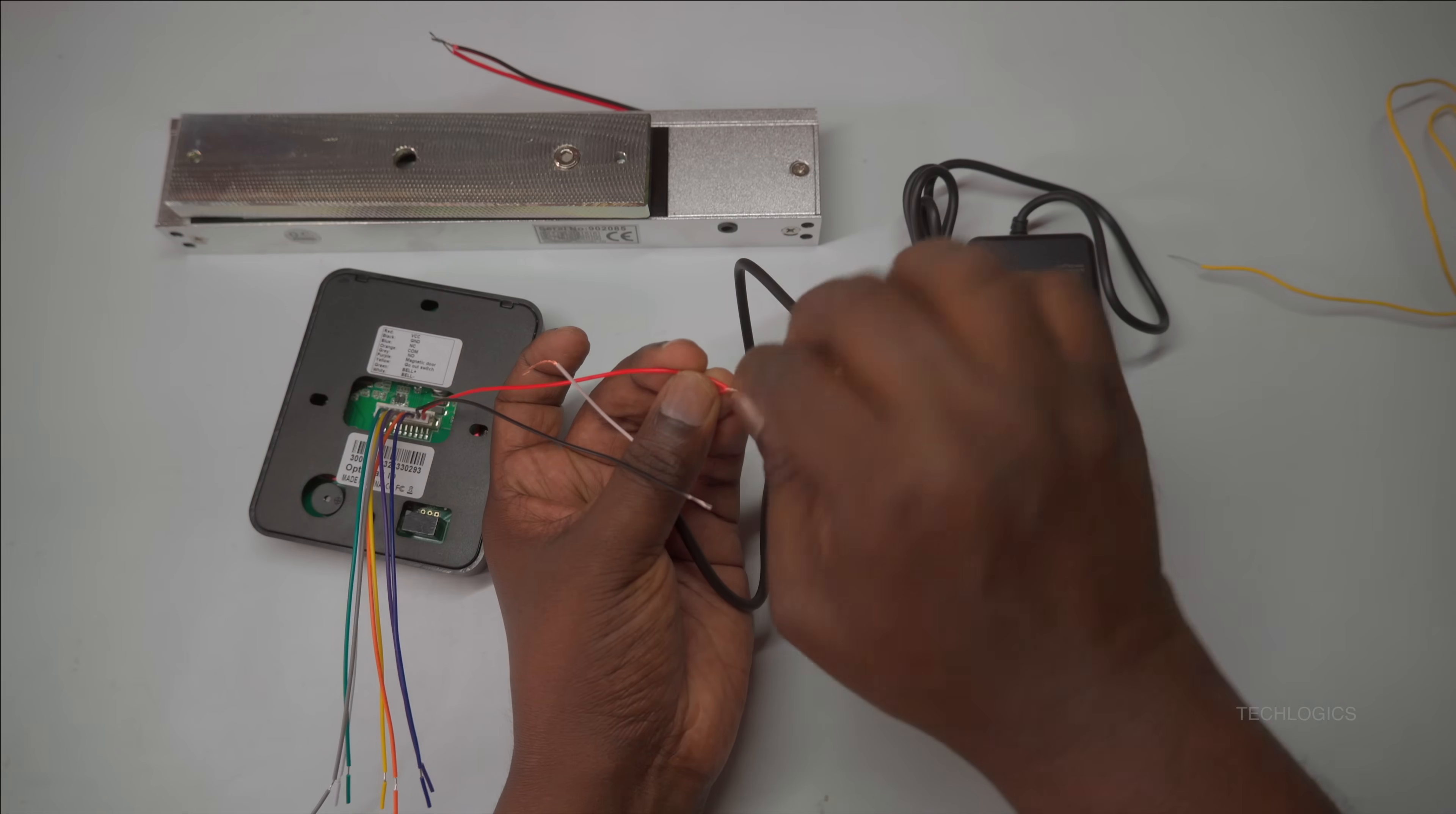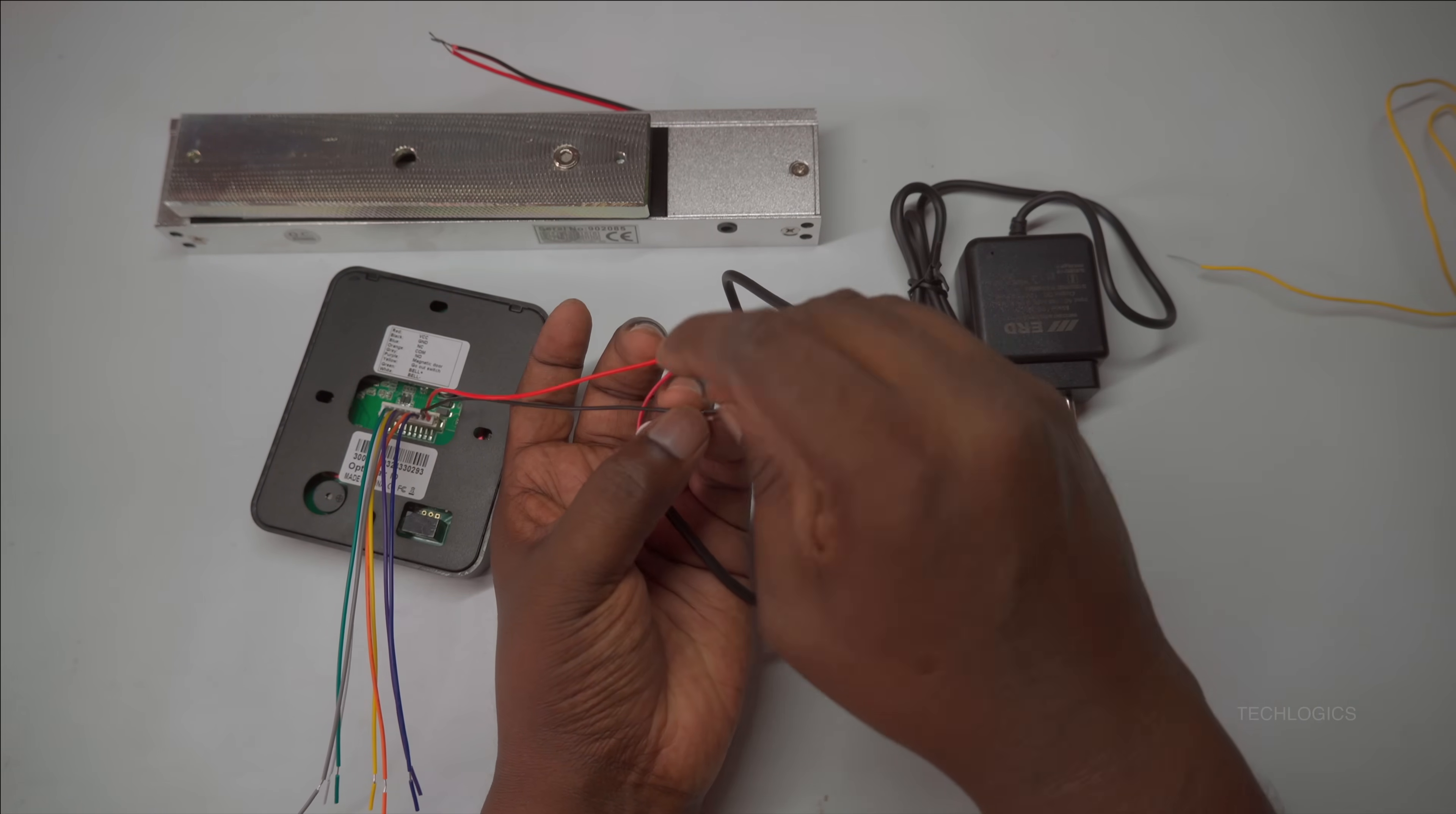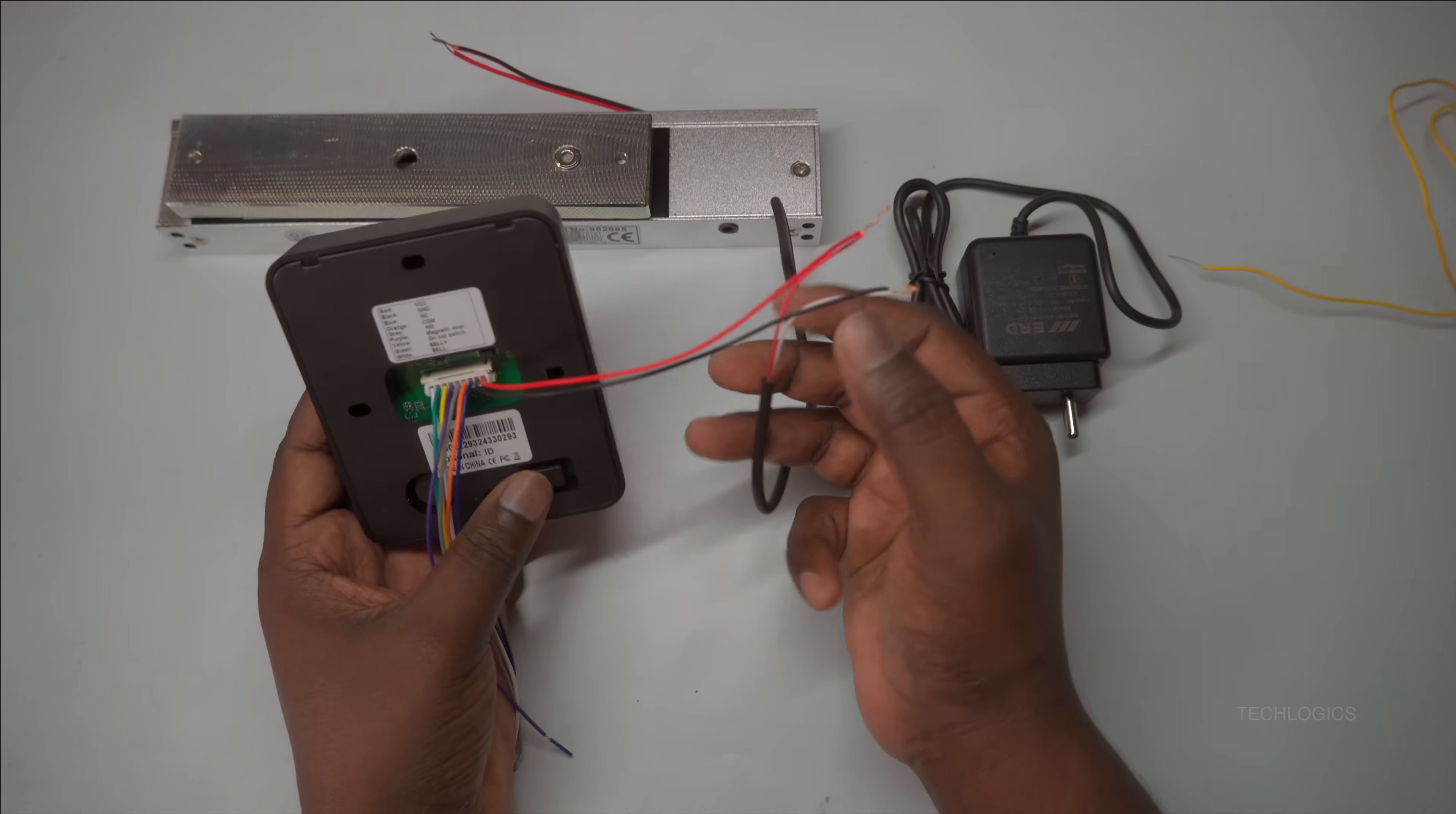For the best performance, it is recommended to keep the wire length between the controller and the power supply around 10 meters. Maintaining an appropriate wire length helps to ensure stable voltage levels and reduces the risk of power fluctuations or drops. Before moving on to the next steps, double-check all connections to confirm they are secure and correctly wired.